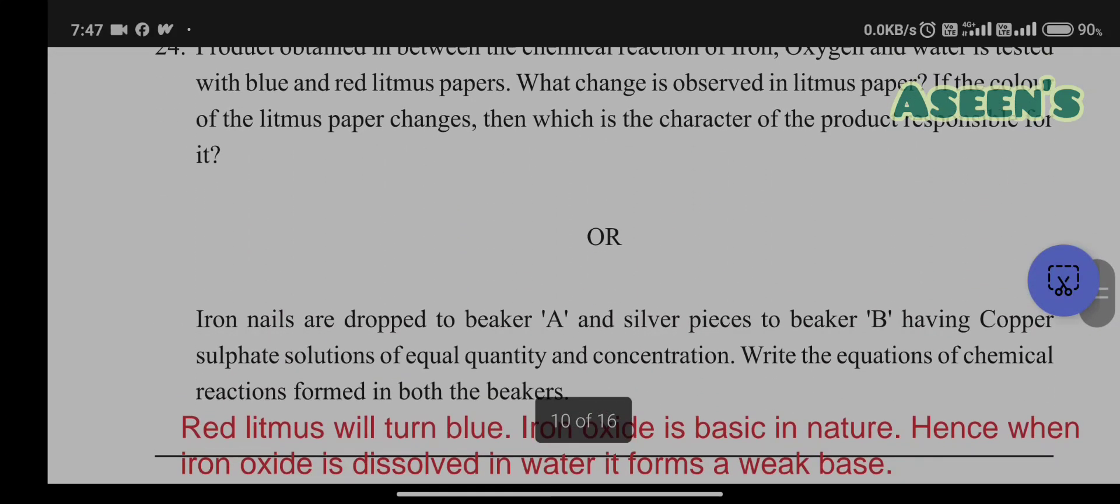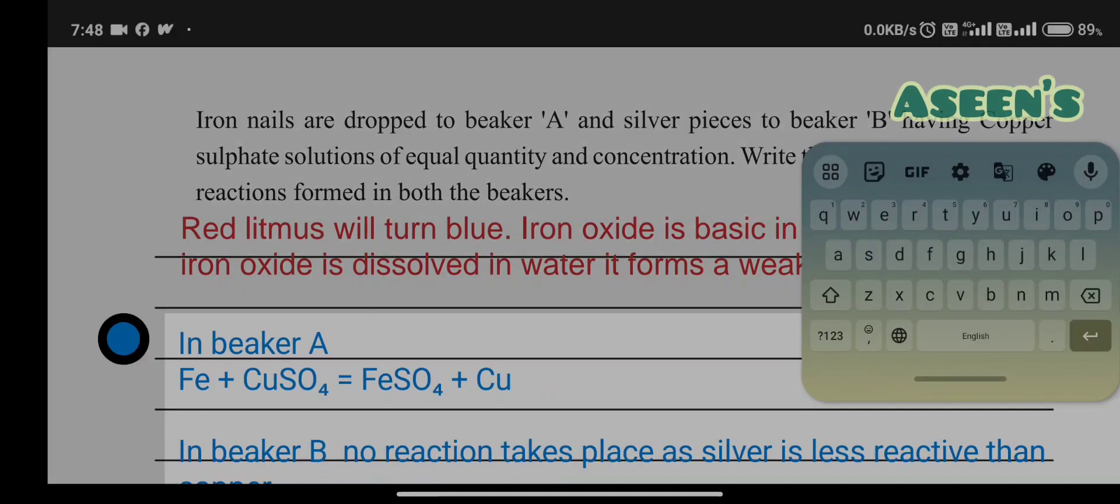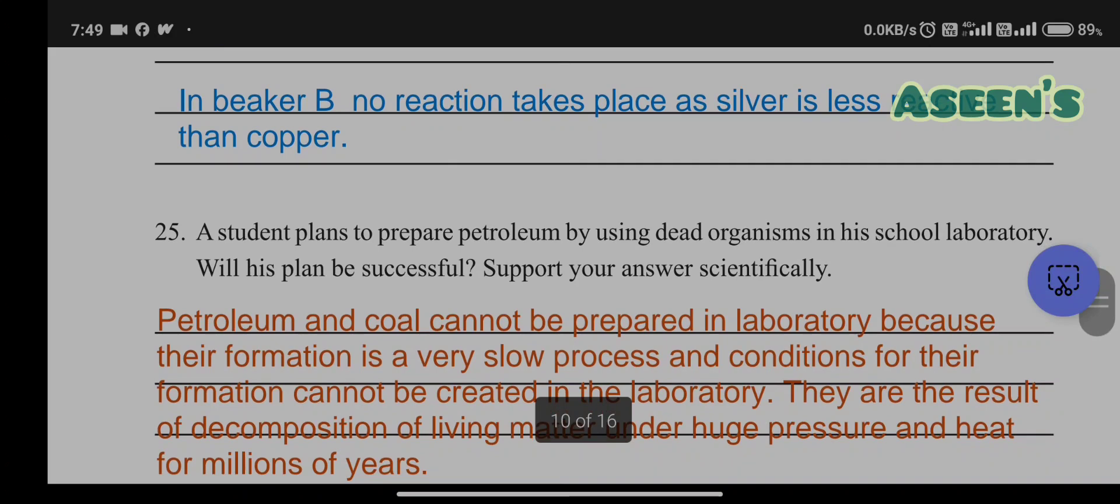Second option: Iron nails are dropped into beaker A and silver pieces into beaker B. Both beakers have copper sulfate solution of equal quantity and concentration. Where does the reaction occur? Write the equations. In beaker A, iron will react with copper sulfate to give ferric sulfate and copper. In beaker B, no reaction will take place because silver is less reactive than copper. If the given metal is more reactive than the salt solution, they will displace, otherwise displacement will not happen.